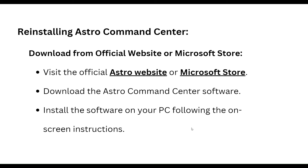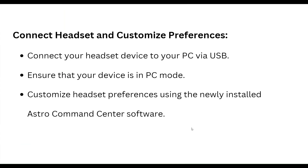To reinstall, visit the Astro website or Microsoft Store and download the Astro Command Center software. Install the software on your PC following the instructions. Then connect your headset device to your PC via USB, ensure your device is in PC mode, and customize headset preferences using the newly installed Astro Command Center software.